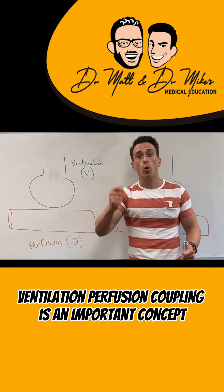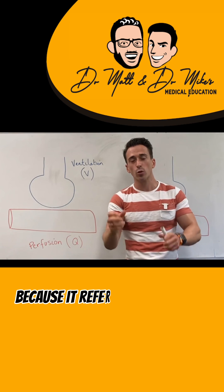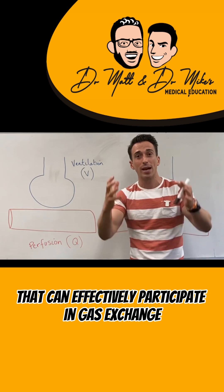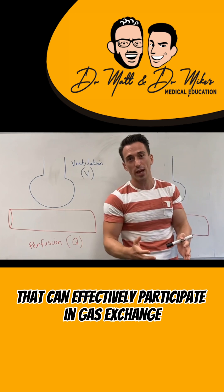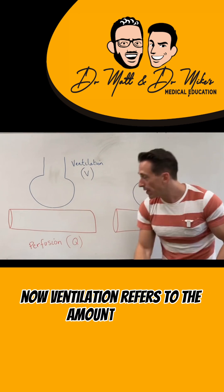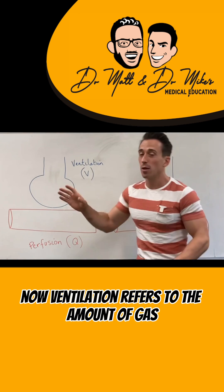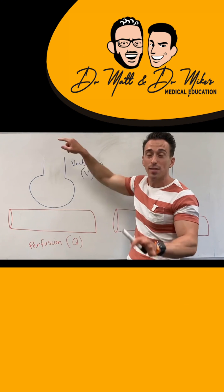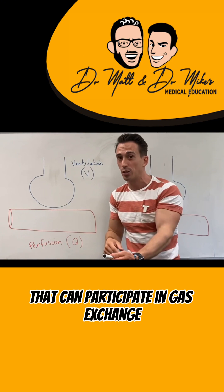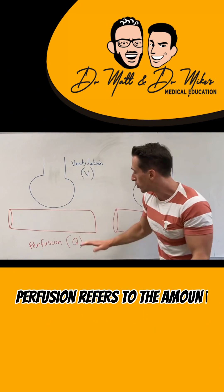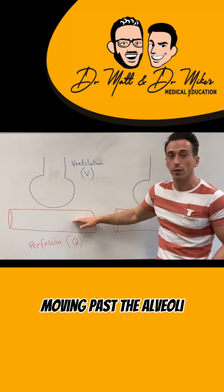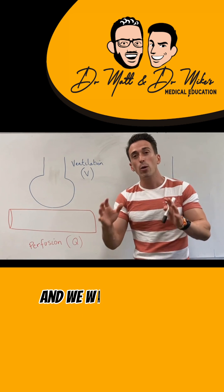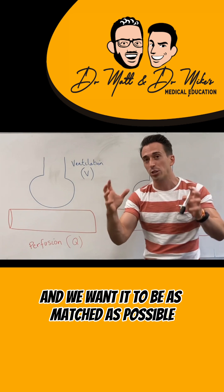Ventilation-perfusion coupling is an important concept because it refers to the amount of gas that can effectively participate in gas exchange at the lungs. Ventilation refers to the amount of gas moving into and out of the alveoli that can participate in gas exchange. Perfusion refers to the amount of blood moving past the alveoli that can participate in gas exchange, and we want it to be as matched as possible.